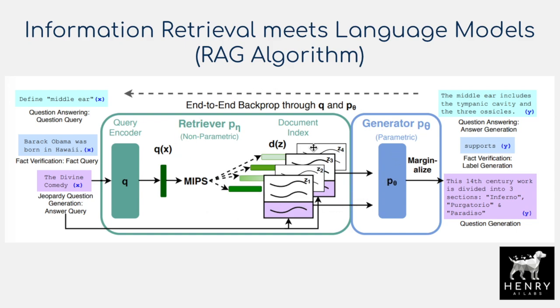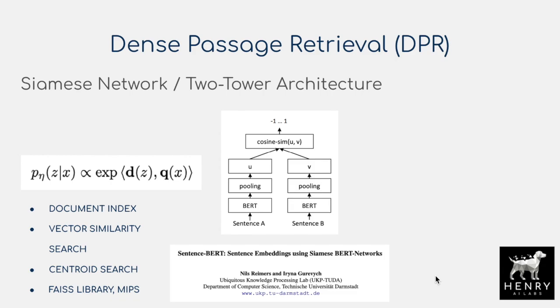The generator is going to take in these input documents and append them to context X to produce outputs Y. The dense passage retrieval integrates neural information retrieval to fetch context for the BART generation model. We have this Siamese network two-tower architecture with 100 words in each document and 21 million such sequences from Wikipedia. Each document goes through a separate encoder — the document encoder D(Z) and the query encoder are two separate 110-million-parameter BERT-based models that do not share parameters. The query encoder encodes the input X as a query and finds the most similar documents in the non-parametric encoded Wikipedia sequences.